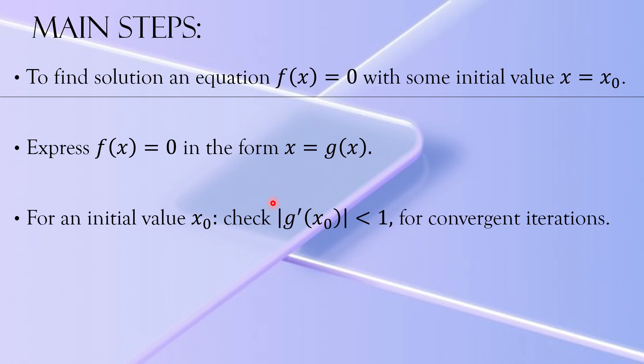Once you know that the iteration will be convergent, we set the following iterations: x_{n+1} = g(x_n) for different values of n, starting from 0, 1, 2, 3 and so on unless we have a specified accuracy of a root.